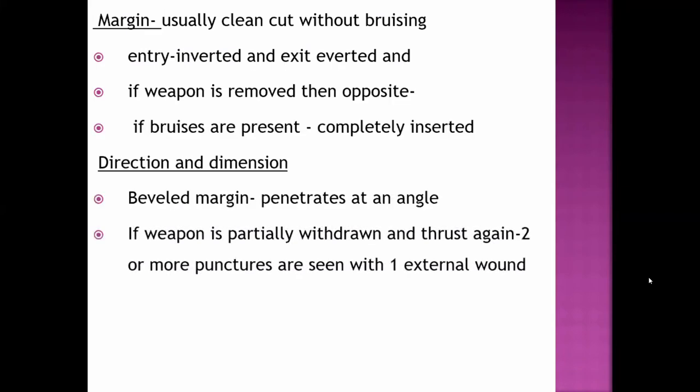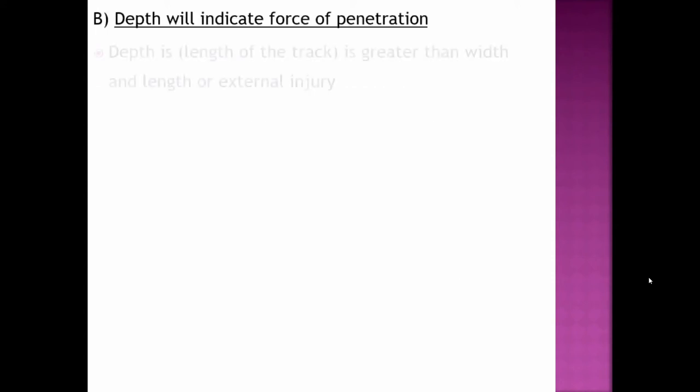Direction and dimension: if it penetrates in acute angle, then you can see that the weapon is partially withdrawn and thrust again. Two or more punctured wounds are seen with one external wound. If it's partially withdrawn, don't get confused because it's one entry wound but two exit wounds. How is it possible? It can be partially removed and again inserted inside the body.